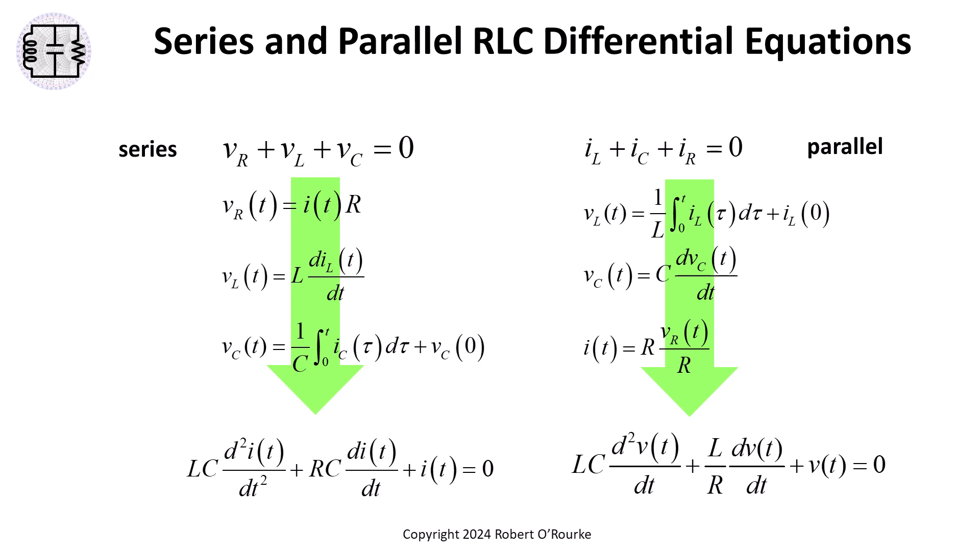For both Kirchhoff's law equations, KVL and KCL, substitute in the branch relationships for each term and simplify to get the final, second-order RLC differential equations. These differential equations model the circuit connectivity without modeling the physical wires in the ideal lumped element series and parallel RLC circuit topologies.